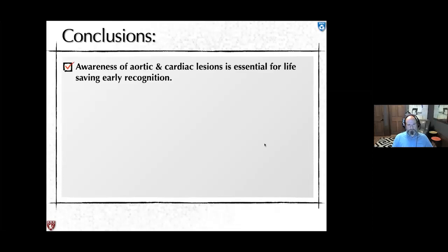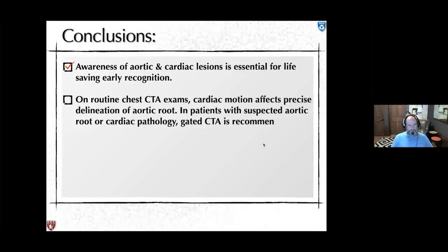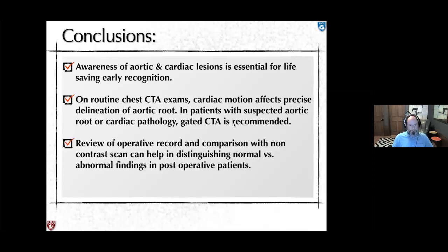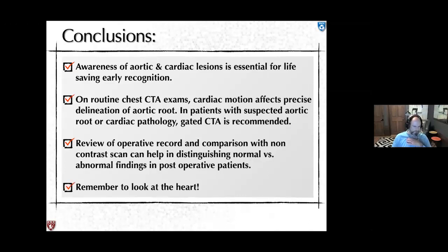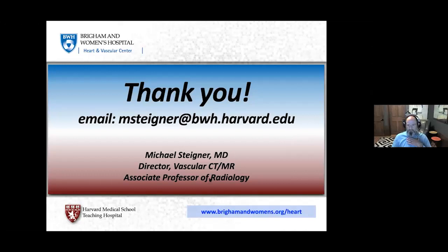In conclusion: it's important to be aware of aortic and cardiac lesions, as early identification is essential for patient recovery. On routine chest CT, cardiac motion affects precise delineation of the aortic root; gated studies are strongly recommended in patients with suspected aortic root or cardiac pathology. Access to operative reports and non-contrast CT scans is critical to distinguish normal from abnormal post-op findings. Remember to look at the heart — we can see more than we realize. Thank you all for your attention.